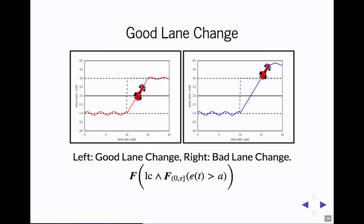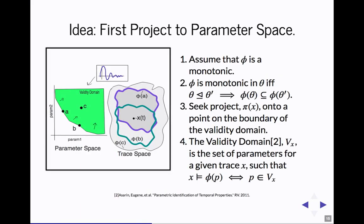If we were to fix tau to be somewhat large, on the left, you can see that A is near zero. Whereas, on the right, A has to be somewhat large, maybe like one or two. The idea is that we're going to use the metric space that's in the parameter space to give us our similarity metric.